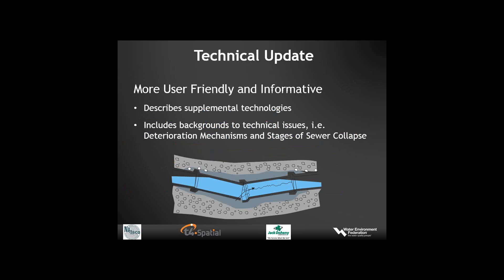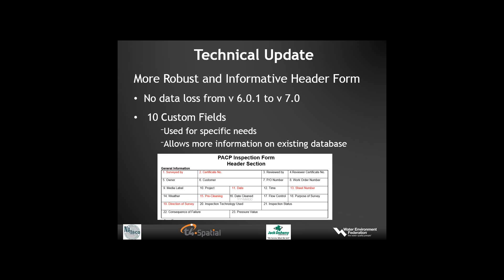With respect to the technical updates, the new manual is more user-friendly and informative. It describes new and supplemental technologies, and it includes backgrounds to technical issues such as deterioration mechanisms, the stages of sewer collapse, and how sewer collapse can happen. The technical header form is more robust and more informative. There is no data lost from version 6.0 to the new version 7. There are also 10 new custom fields that can be used for user-specific needs, allowing municipalities to use their own custom fields and enabling more information to exist in the existing database.